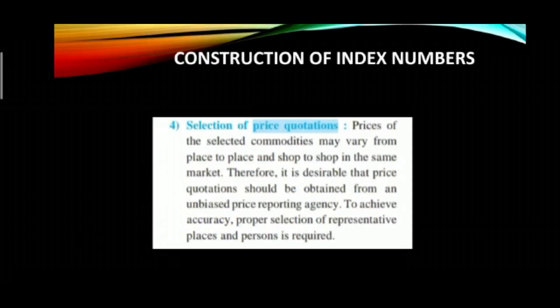Fourth: selection of price quotations. Prices of selected commodities may vary from place to place and shop to shop in the same market — this happens in day-to-day life as well; the same product can have different prices at different shops. Therefore, when obtaining price data you need to be careful. It is desirable that price quotations should be obtained from an unbiased price reporting agency. To achieve accuracy, proper selection of representative places and persons is required.